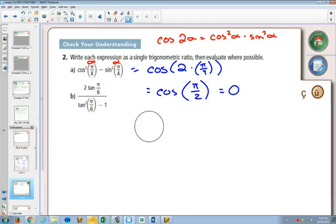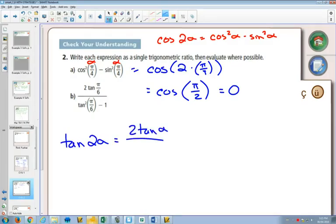Does it match the formula? Not quite. Is it close? What does the formula look like? tan(2α) = 2tan(α) / (1 - tan²(α)).